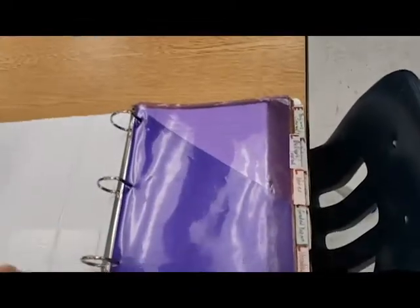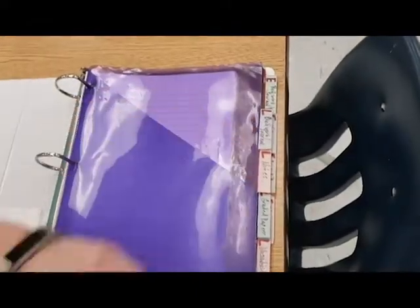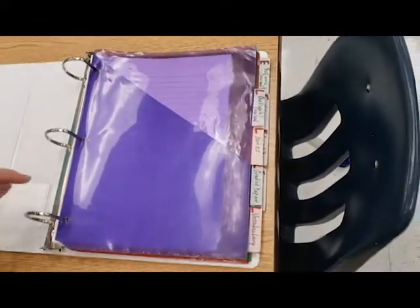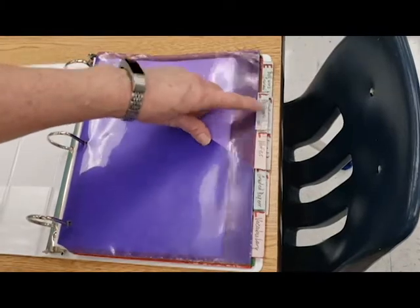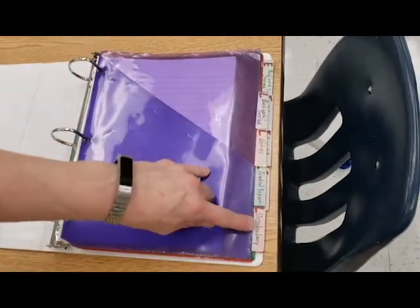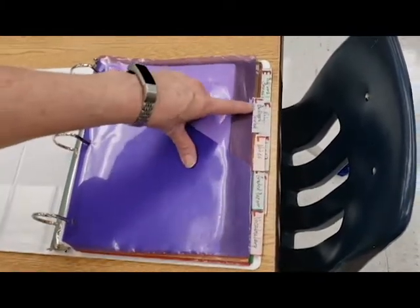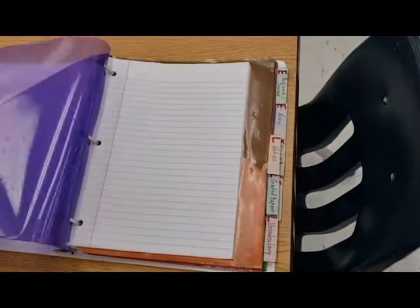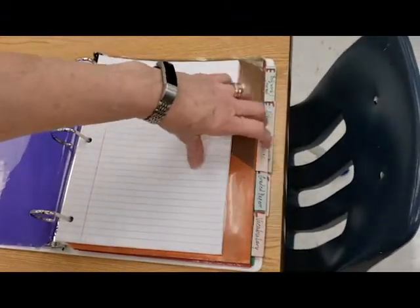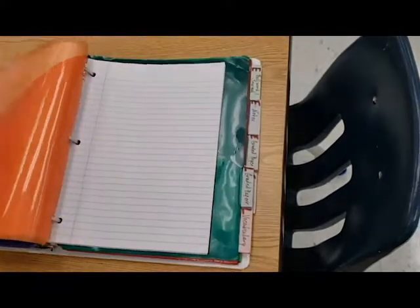On the inside, I have my divider tabs. Because it's two classes in one binder, I went ahead and I put an L in front of all the tabs for literature. So I have literature bellwork and journal with some loose-leaf paper. Literature notes go here with some loose-leaf paper.